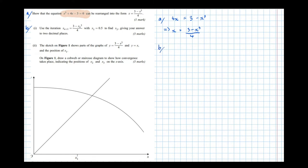So part b, use the iteration. So the next term, x n plus 1 equals 3, take the current term cubed over 4. It says start with x1 equals 0.5. Now in my video, the first iteration I call x0, it doesn't matter if they want to start numbering them at 1, that's absolutely fine.